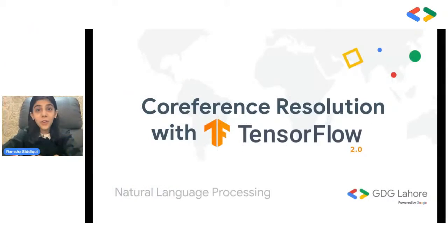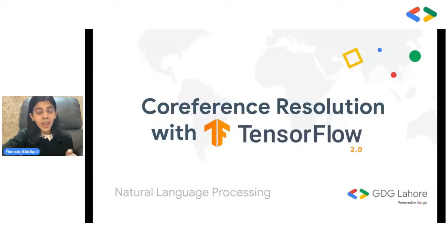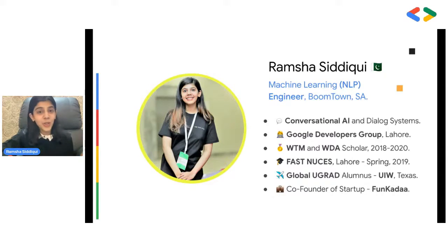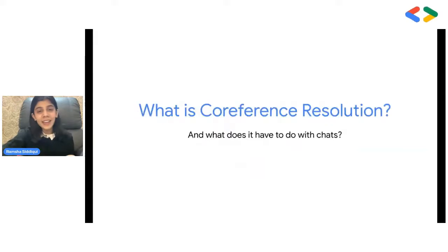Today's talk is about coreference resolution in TensorFlow, which is a common natural language processing problem with applications in question answering, automatic summarization, machine translation, and more. I work in machine learning and have been working in it for around two years, and I recently graduated university, so I'm still new to most of these things.